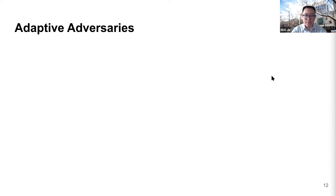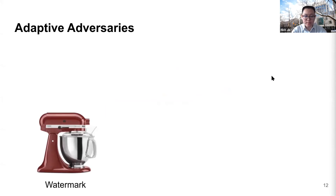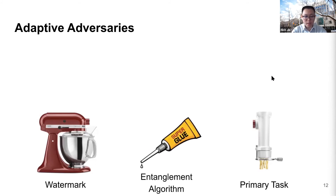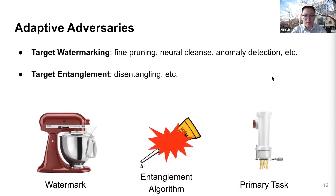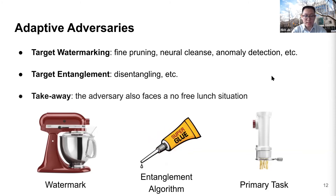How can the adversary try to break our proposed method? The entangled watermark model is composed of three parts: the watermarking task represented by the mixer, the primary classification task represented by the pasta maker, and the entanglement algorithm represented by the superglue. The adversary may directly target the watermarking task — these attacks are essentially defenses against data poisoning, since watermarking uses a similar idea. Other adversaries could try to target the entanglement algorithm, attempting to disentangle the legitimate and watermark data. The high-level takeaway is that the adversary also faces a no-free-lunch situation, since the utility of the model is strongly correlated with the performance of the watermark, and removing the watermark results in significant decrease in model performance.